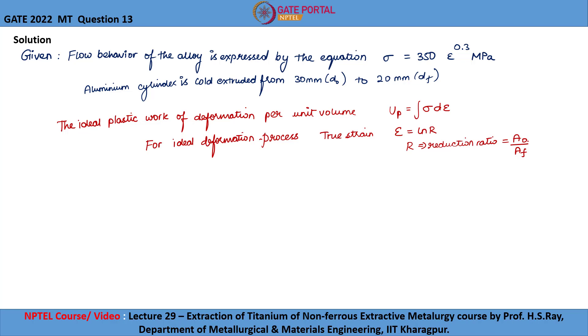Where A naught and Af are the cross sectional areas of the cylinder before and after extrusion respectively, which is also equal to d naught square by df square. So epsilon will be equal to ln of 30 square by 20 square which will be equal to 0.8109.